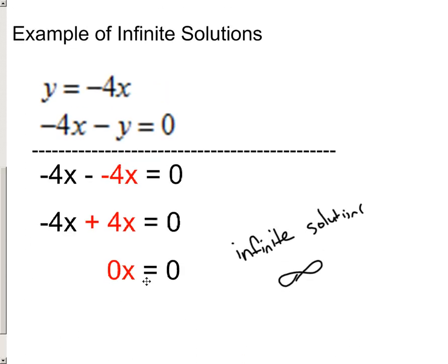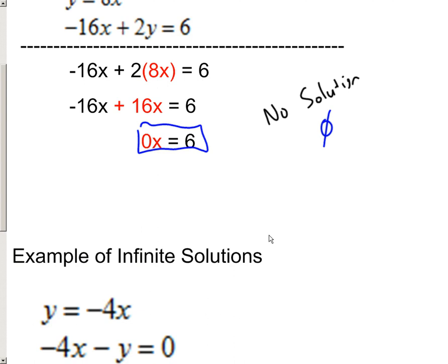So please just be on the lookout for when you get 0 times a variable equaling a 0. That would be infinite solutions. When I get 0 times a variable equaling something that's not 0, that's a no solution.